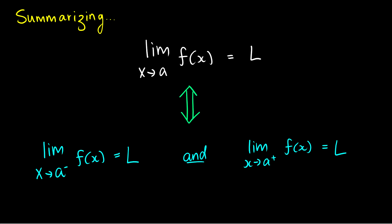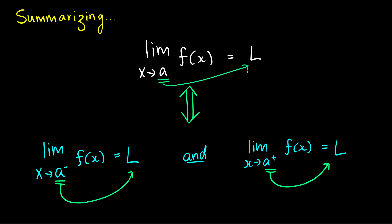Here's a summary: we say the limit of f of x as x approaches a is equal to L if and only if the left-hand limit equals L and the right-hand limit equals L. We have to approach from the left and get L, and also approach from the right and get L. Only then can we claim that the limit as x approaches a equals L. If both sides are different, there is no limit.